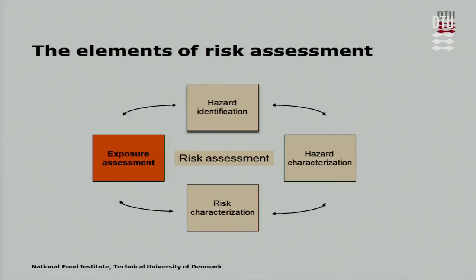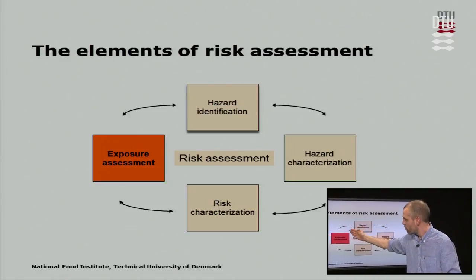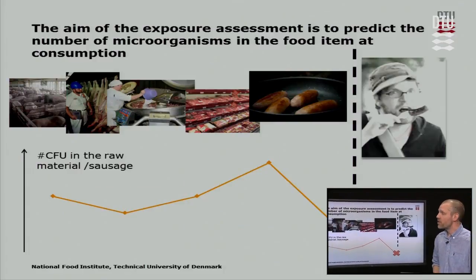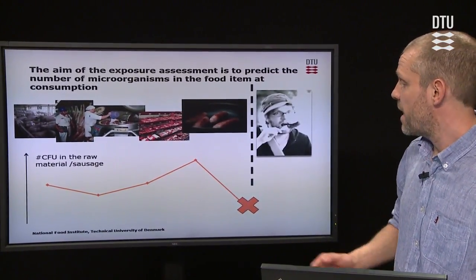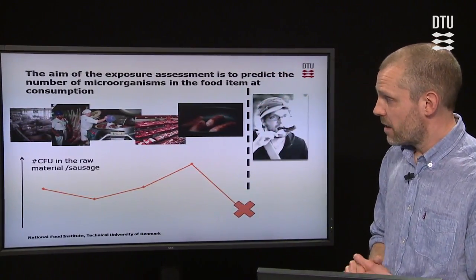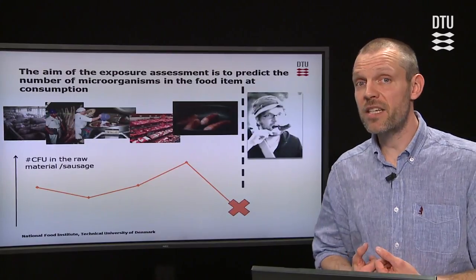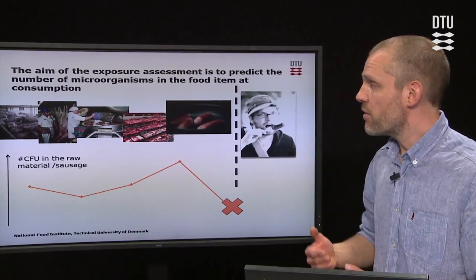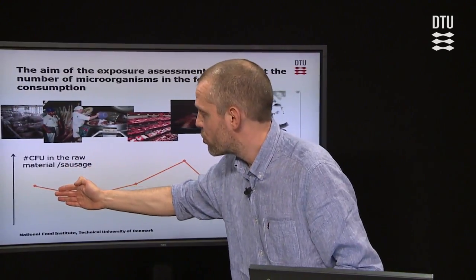Looking at this picture again, we are now moving from knowing which hazard we are going to work with, and we are now going to work with exposure assessment in the risk assessment. The aim of the exposure assessment is to predict the number of microorganisms in the food item just at consumption, so now we are focusing on the food item. The overall problem we have in microbiological risk assessment is that the bacteria is alive.